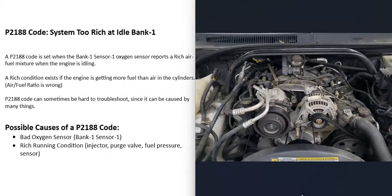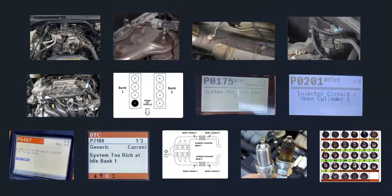If the engine is running rich, you'll usually get other codes, so be sure to pay attention to those. That's basically it — a general overview of how you go about fixing a vehicle with a P2188 code. If you have anything to add, please comment below. If you have questions, ask and I'll try to answer them. If this video helps you, please click like, subscribe, and have a good day.